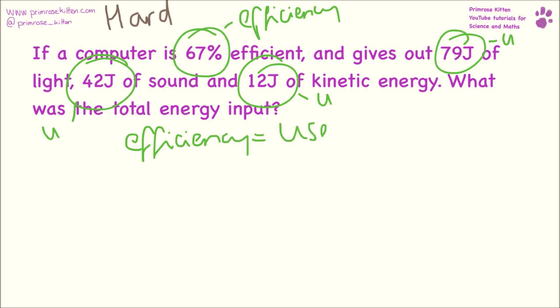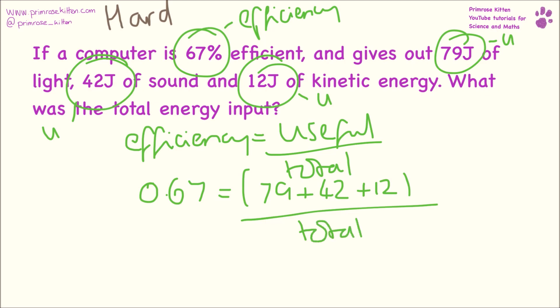Efficiency equals useful over total. Our efficiency is 0.67. Useful is 79 plus 42 plus 12 over total, which gives us 133 for that value. To rearrange the equation: efficiency equals useful over total. Efficiency times total equals useful. Total equals useful over efficiency. So our new equation is total equals useful over efficiency.